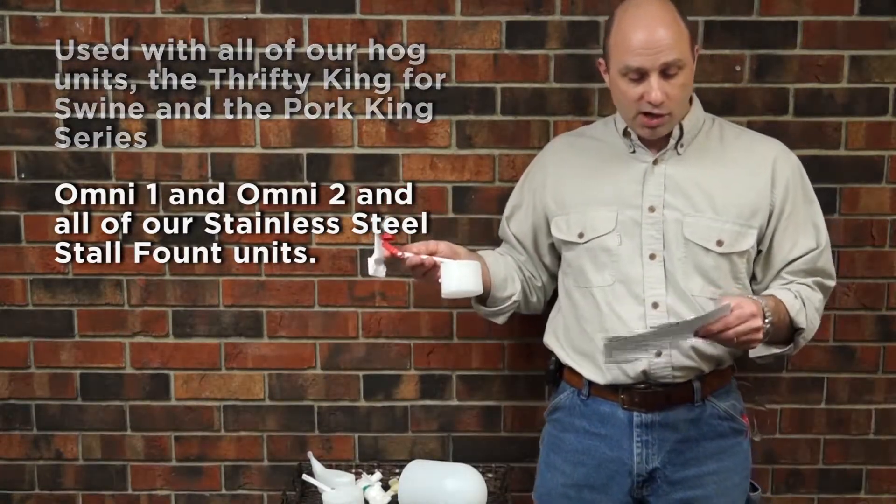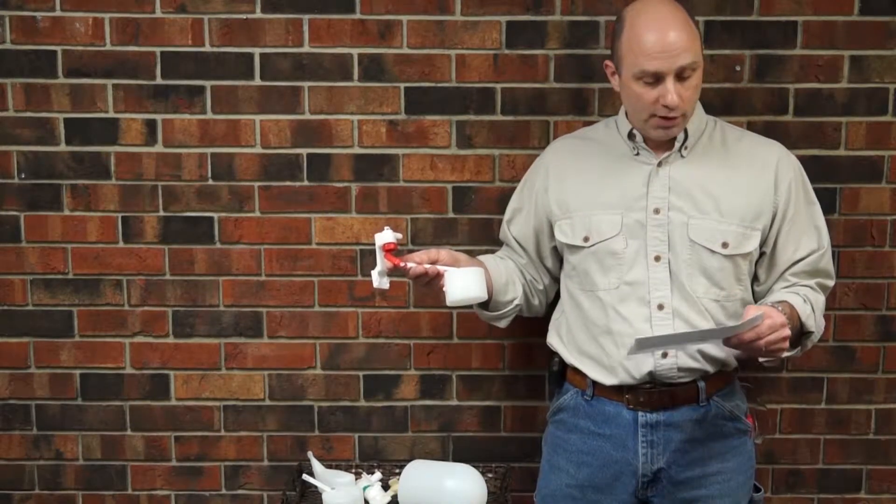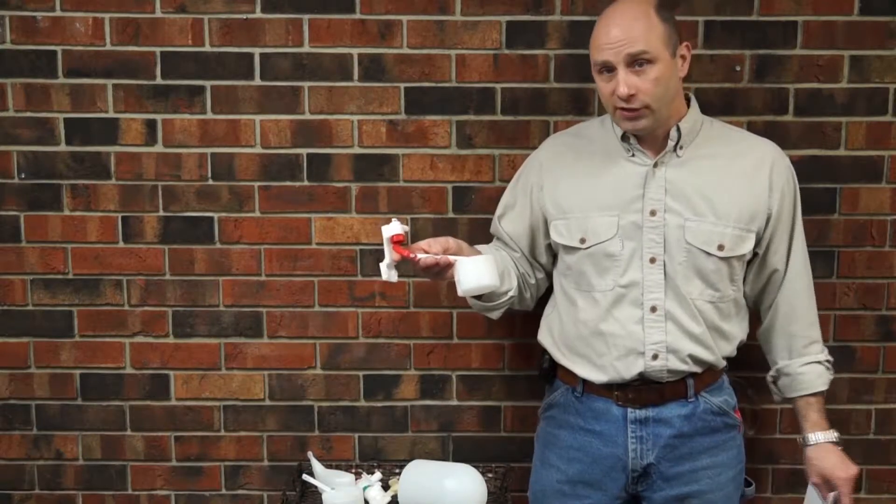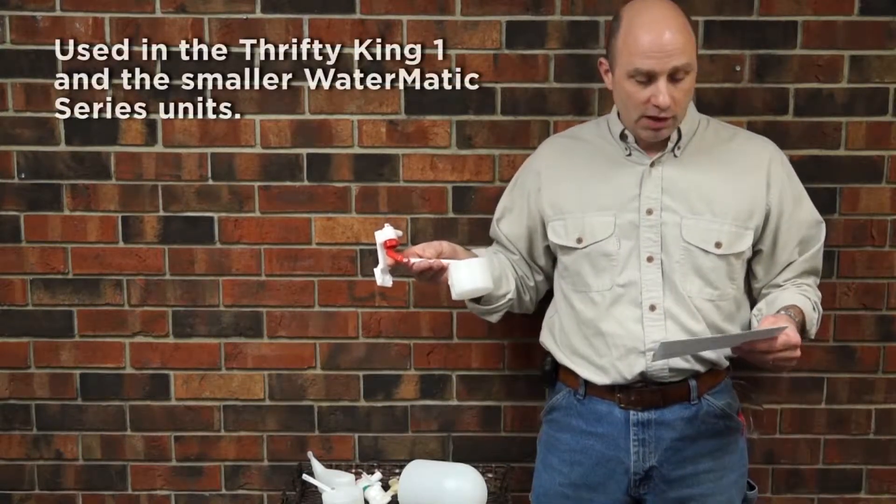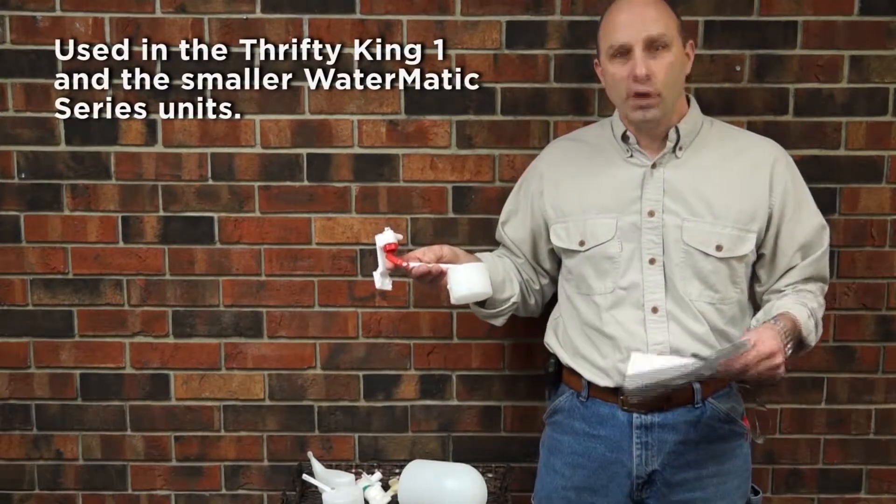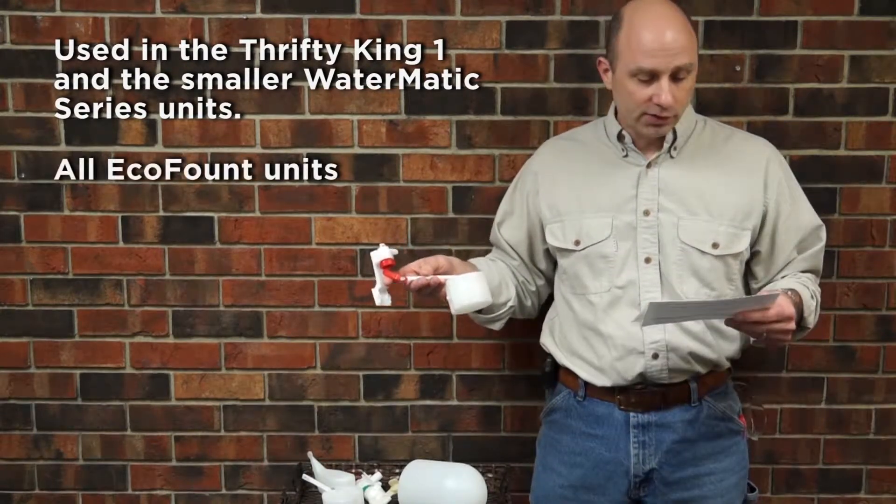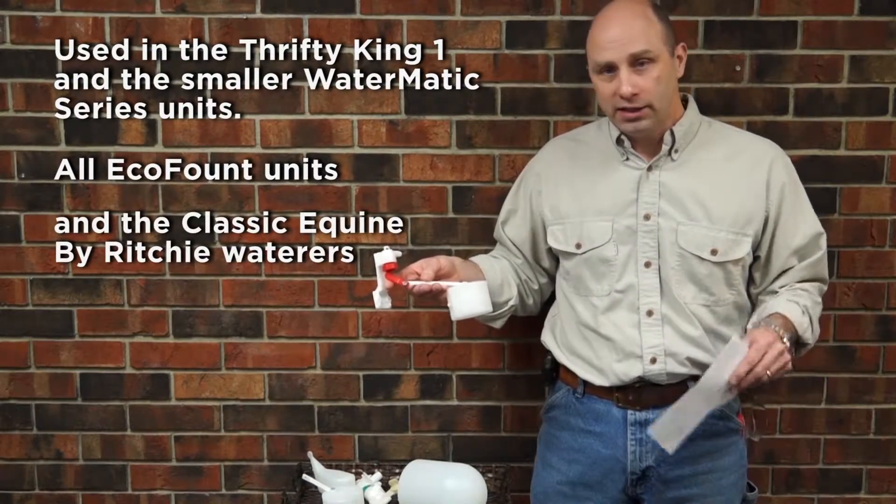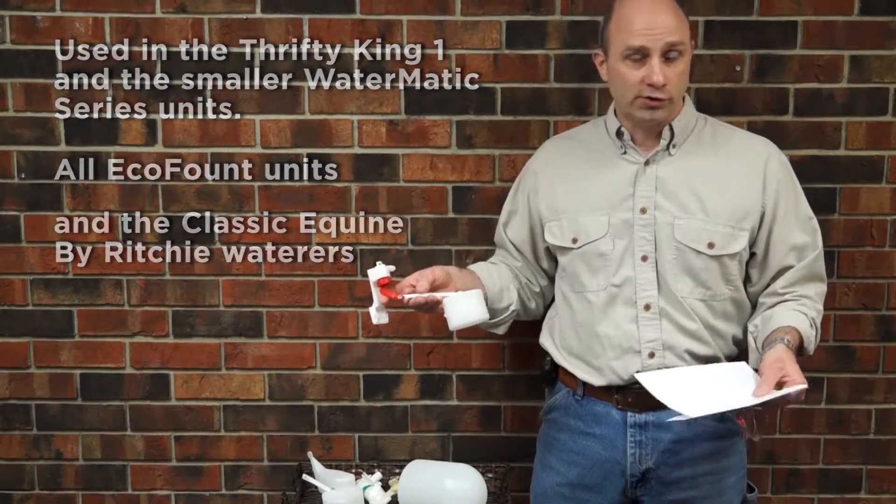The long arm, which is part number 12836, this is going to be used in the Thrifty King 1, the smaller Watermatics, the 100, 150, 150S, the Eco 1 and 2, and then all of our Classic Equine. The Easy Fount, the Auto Fount, and the Ultra Fount.